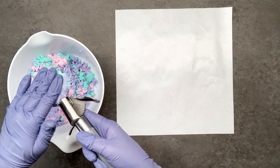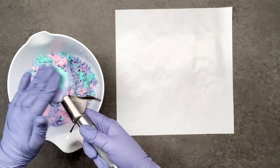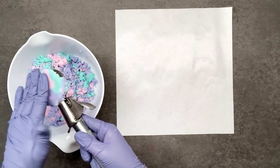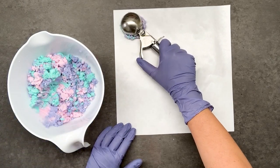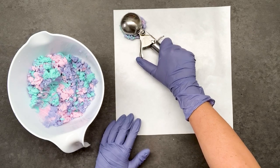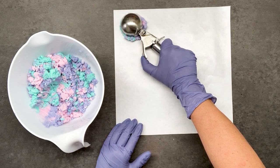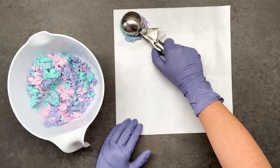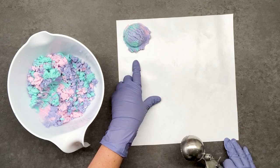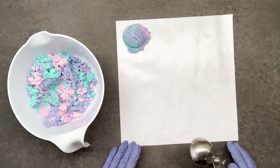I like to pack it into the scoop to make sure the whole thing is filled up. And then I put it against the freezer paper and I add pressure as I'm unscooping it. And that will give you the perfect ice cream scoop shape.